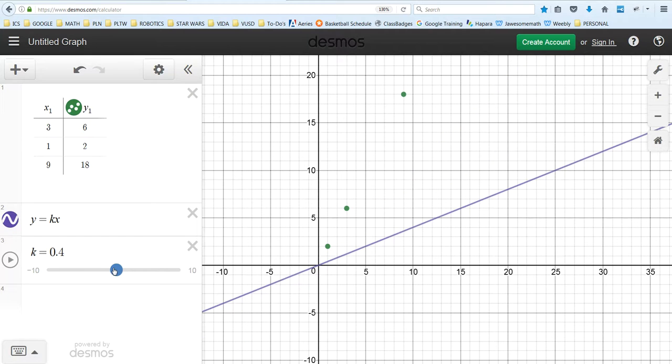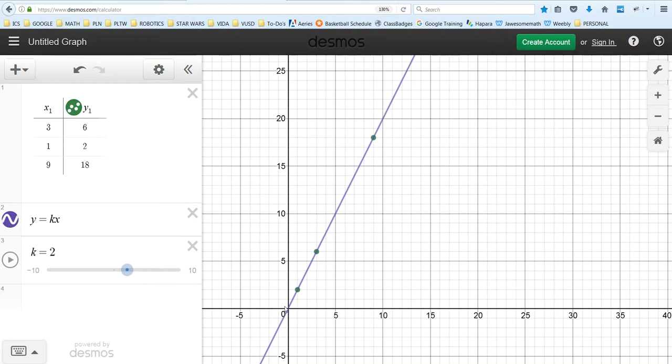Well K is 0.4, 0.6, 0, 0 is a flat line. I'm going to keep going until that line lines up. I'm at one, 1.2, 1.5, 1.6, 1.7, 1.8, it's close, 1.9, 2. So when K equals 2, that line goes through all of these points.